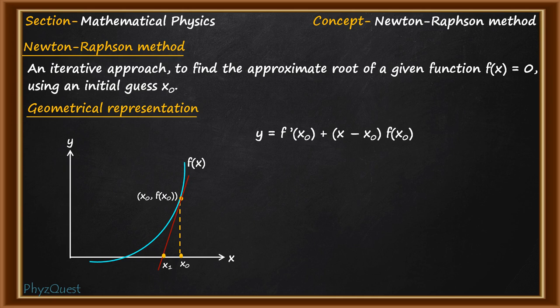At x = x1, y will be equal to 0. If you put this in the same equation, it will be x1 = x0 - f(x0)/f'(x0). This is the formula to calculate the first iteration.